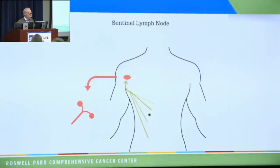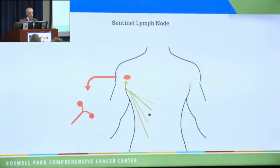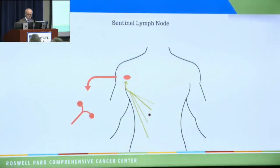Dr. Cain is going to talk about sentinel lymph nodes. Sentinel lymph nodes were first identified by Dr. Morton, a surgeon in California who passed away a few years ago. He identified the technique of determining which lymph node is draining your tumor. If your melanoma was on your back, the surgeon would inject a radioactive dye into your skin at that location. The lymphatics in your skin are like the Mississippi River — all the lymphatics drain from that part of your body into a major lymphatic, which drains into a lymph node. Just like the Mississippi River, there may be a delta, so it may drain into one, two, or three lymph nodes. Because those lymph nodes guard the lymphatic system, they're called sentinel.